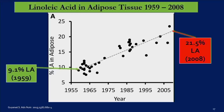What does this do to us? These omega-6s accumulate in our fat tissue. Stephan Guyenet compiled 37 studies looking at linoleic acid — the omega-6 — in human adipose tissue from 1959 to 2008. In 1959 it was 9.1%; by 2008 it had risen to 21.5%.